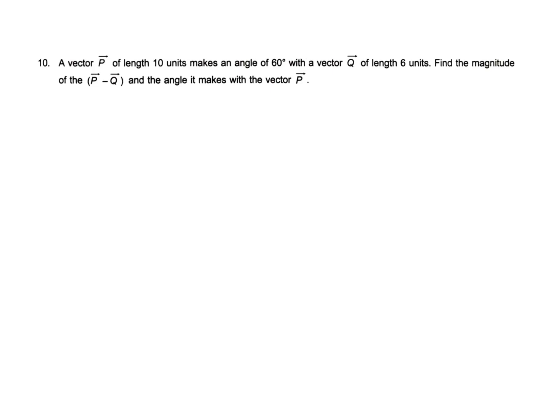A vector p of length 10 units makes an angle of 60 degrees with a vector q of length 6 units. Find the magnitude of p vector minus q vector and the angle it makes with p vector.